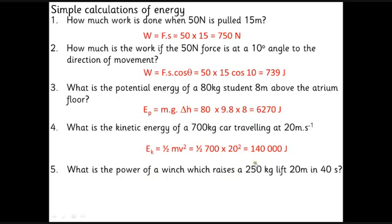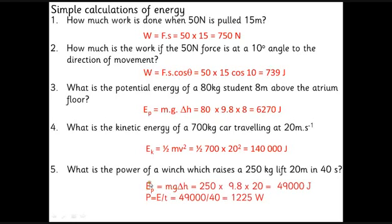The power of a winch to raise a 250 kilogram lift 20 meters in 40 seconds. There's a couple of ways you could do this. One possible way is to work out the potential energy at the top: Mg delta H, 250 times 9.8 times 20 is 49,000 joules. The power therefore is the energy divided by time. We did 49,000 joules in 40 seconds, that's 1,225 watts. You could have worked out the speed as 0.5 and then done force times velocity, where the weight is 250 times 9.8, but you would end up with the same answer.